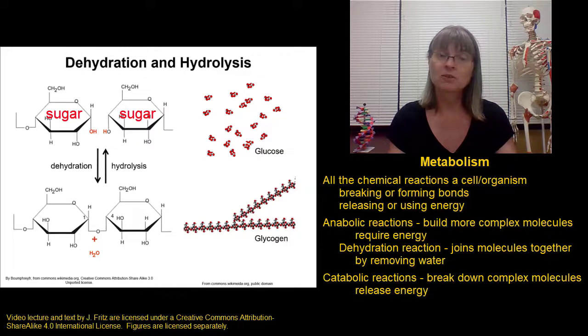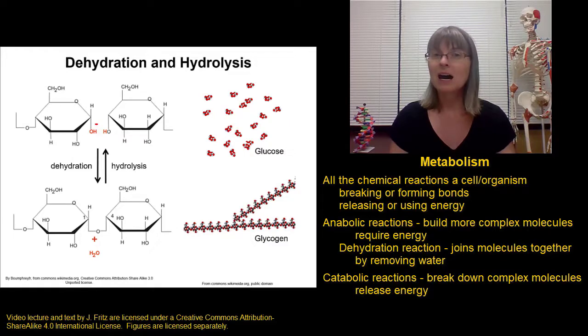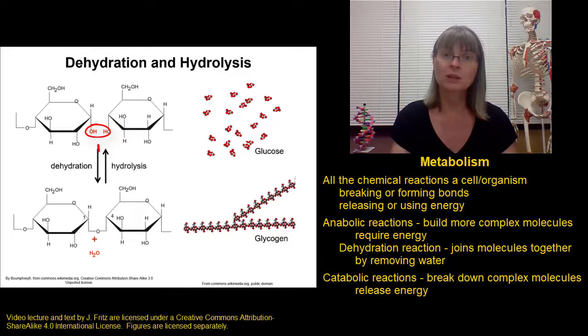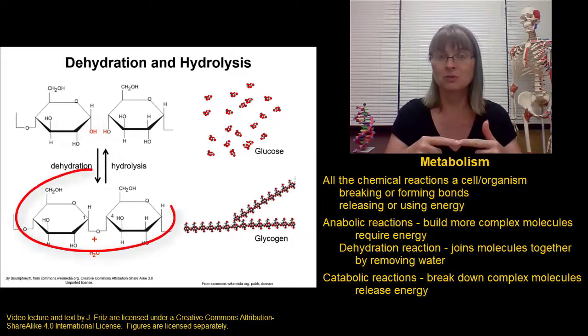Each of these sugar molecules has an OH group on it. Now if I want to make water, I need to have an oxygen and two hydrogens. I can take an oxygen and a hydrogen from one sugar molecule and take a hydrogen from the other sugar molecule and join them together to make water. That's going to leave some unstable atoms behind in my two sugar molecules. And to fix that, they get joined together into a single larger molecule.